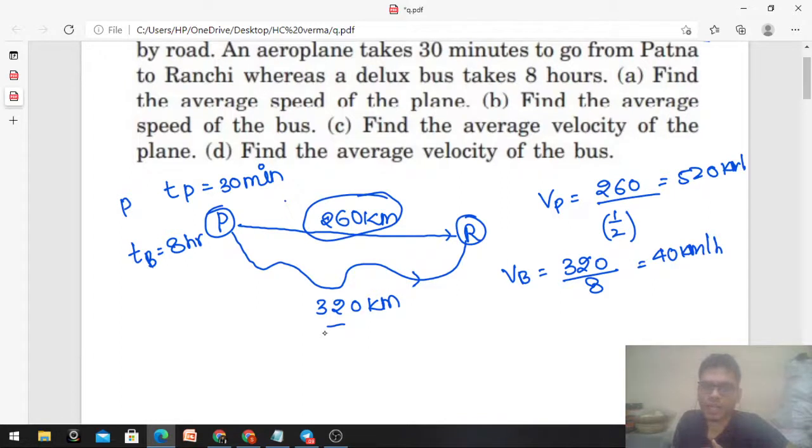Part C: Find the average velocity of the plane. Now average velocity of the plane. So what is the displacement between Patna and Ranchi? You can see the plane moves in a straight line because there are not many obstacles in the air. So in air the plane moves in a straight line. The distance and displacement will be the same. So displacement is 260 km upon time, again one by two. So it is coming out to be 520 kilometer per hour. Distance and displacement same, so speed and velocity same for plane.